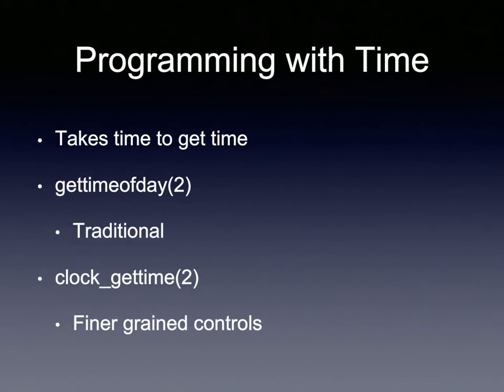One problem with gettimeofday is that it's a fairly expensive operation. If you're logging a lot of data and need reasonable timestamps, calling gettimeofday frequently incurs significant overhead on the application. A later set of routines called clock_gettime gives finer-grain control, including the ability to say 'I care more about the cost of this call than about accuracy.' This highlights a constant tension: the cost of accuracy.